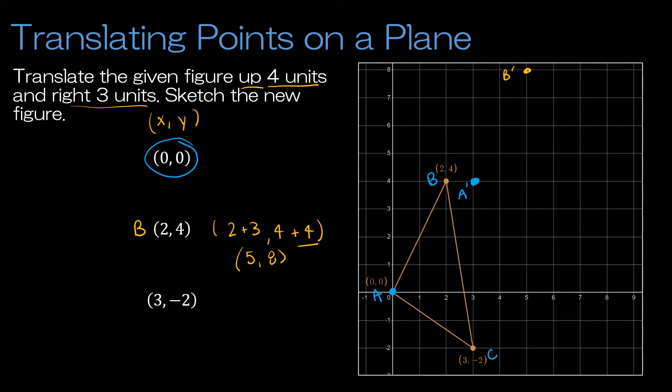And then the same thing for C. C is at (3, -2). I can either just count, or again, I can take 3 plus 3 and negative 2 plus 4, which would give me (6, 2). So (6, 2) would be right here, and that would be C prime. And then my new figure should look exactly like the other figure just moved up and to the right.